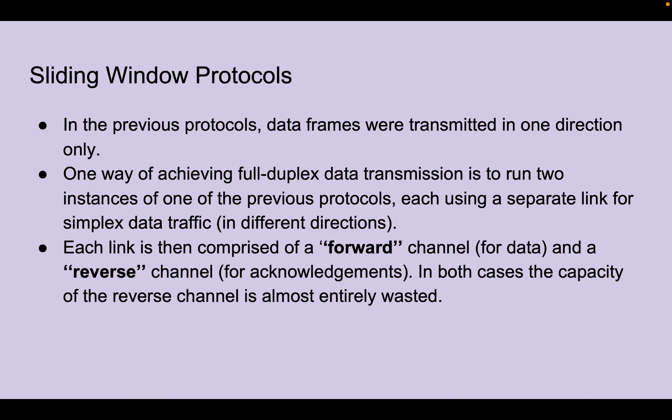In the previous protocols, which my group members reviewed, data frames were transmitted only in one direction. One way of achieving full duplex data transmission is to run two instances of one of those previous protocols, each using a separate link for simplex data traffic in different directions. Each link is then comprised of a forward channel for data and a reverse channel for acknowledgments. However, in both cases, the capacity of the reverse channel is almost entirely wasted.